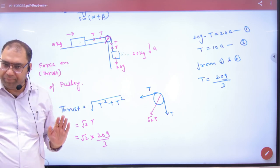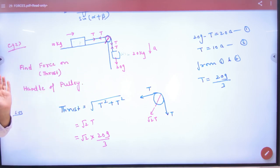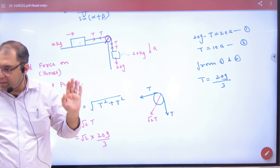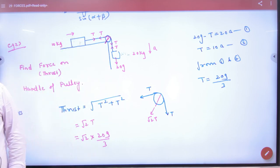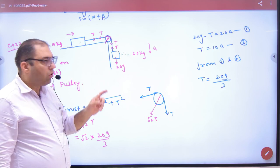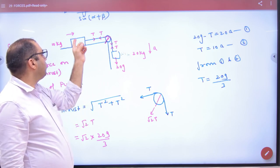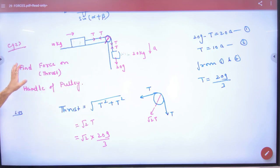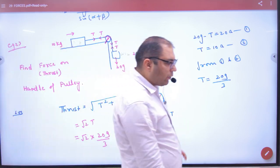Two blocks, 20 kg and 10 kg block connected by string with tension T. The system will come down. I have asked to find acceleration a and tension T. For the 20 kg block: 20 minus T equals 20a. For the 10 kg block: T equals 10a. So we will equate these and find the answer for T.